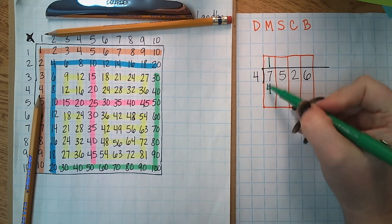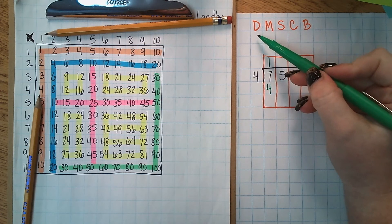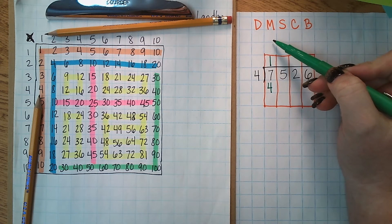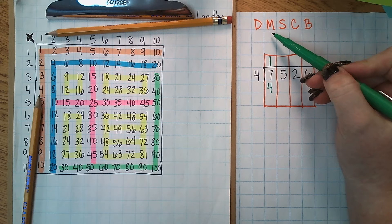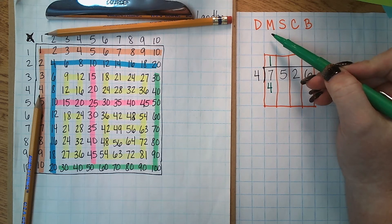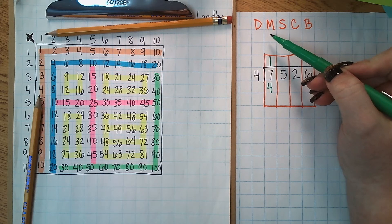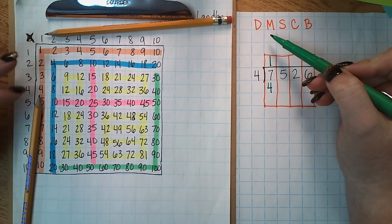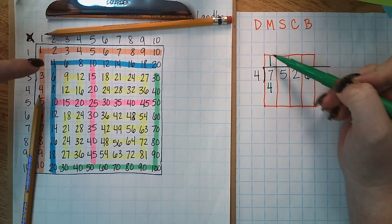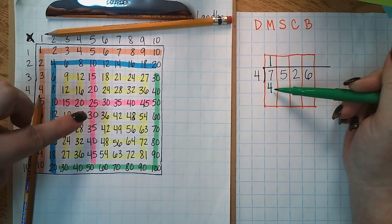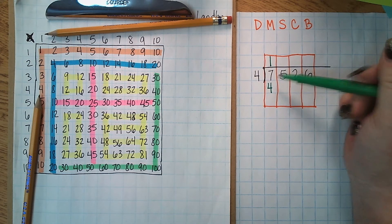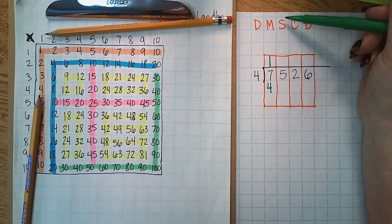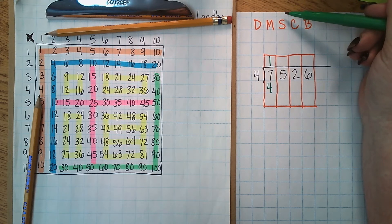So this step right here went ahead and took the division part and the multiplication part. This helps kids because if they don't know their multiplication facts it did the multiplication part for them. It also helps them because if they forget where to put the numbers at it shows them this number goes on top, this number goes on bottom. So if they forget which number goes in which place then they know because it's right there. So they can skip right on over to the third step which is subtract.